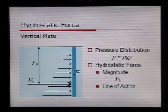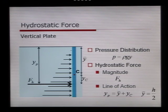The line of action is the distance yp from the surface down to that force. We're going to define y bar as the distance from the surface down to the centroid, or halfway down along the vertical wall, and yc is the further distance from that centroid down to the point of action of the force. Therefore, yp equals y bar plus yc, where y bar equals h over 2.